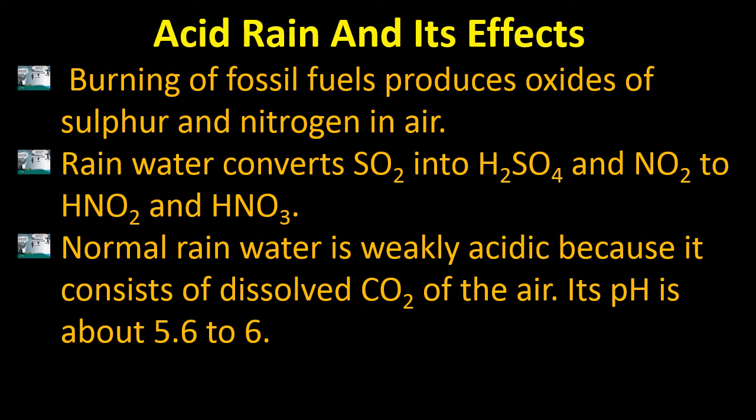Rain water converts sulfur dioxide into sulfuric acid in multiple steps. First, sulfur dioxide changes into sulfurous acid, and then due to the presence of oxygen, it gets oxidized into sulfuric acid — the king of chemicals. As for NO₂, it changes into nitric acid and nitrous acid.